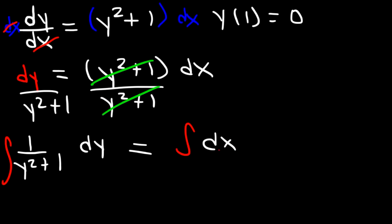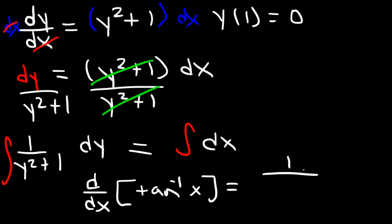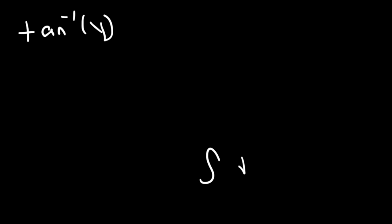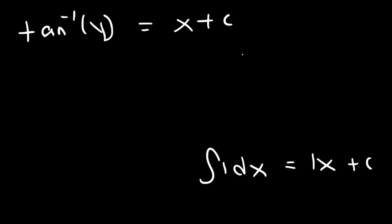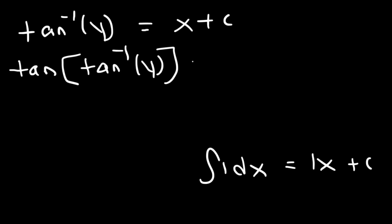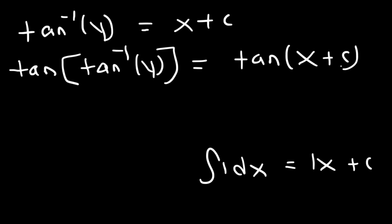Now let's find the antiderivative of both sides. What is the antiderivative of 1 over (y squared plus 1)? It helps to know that the derivative of the inverse tangent of x is equal to 1 over (1 plus x squared). So the antiderivative of 1 over (y squared plus 1) is inverse tangent of y. On the right side, the antiderivative of dx is simply x plus c. Now, what we need to do is take the tangent of both sides of the equation — that's how we separate inverse tangent from y. Tangent and inverse tangent cancel, so on the left side we get y is equal to tangent(x + c). This is the general equation.